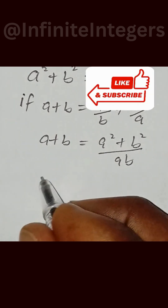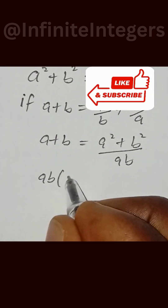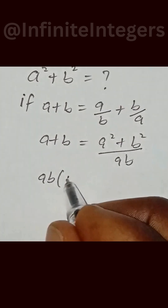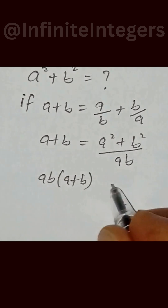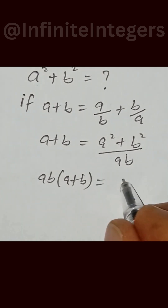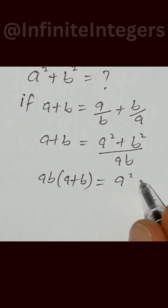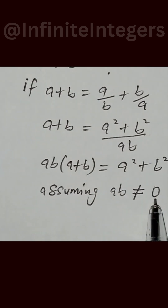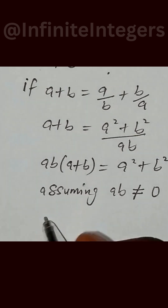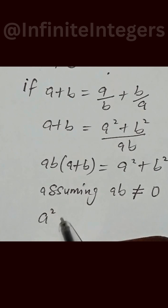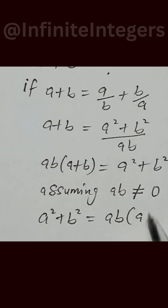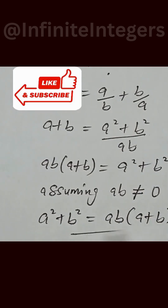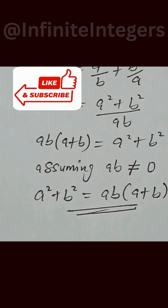Now we multiply both sides by ab, so we have ab times bracket a plus b equals a squared plus b squared. Assuming ab is not equal to zero, we have that a squared plus b squared equals ab times bracket a plus b. That's it.